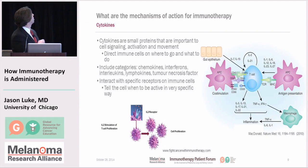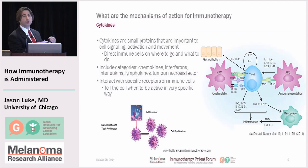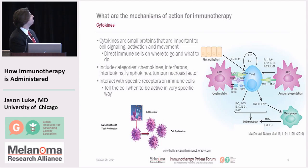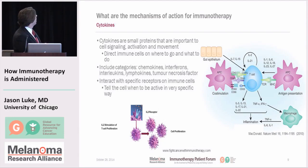The next form of immunotherapy we're going to discuss are cytokines, which for patients might be the least intuitive form of immunotherapy. Cytokines are very small proteins that are important to the signaling — in other words, the immune cells talking to each other, getting activated, and moving around in your body. They have multiple categories: chemokines, interferons, interleukins, lymphokines, or tumor necrosis factor. There are a lot of different cytokines that float around in your body naturally, and they interact with specific receptors on immune cells, telling the cell how to be active or not active.